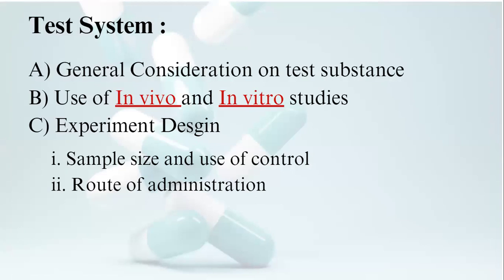General considerations for substances using in vivo and in vitro systems: considerations should be relevant to selection of animal model or other test system so that scientifically valid information can be derived. Selection factors can include pharmacokinetic profile, species, strength, gender, and age of experimental animals. In vivo and in vitro systems can include isolated organs and tissue, cell culture, cell fragments, cellular organelles, receptors, and transporters. Experiment design includes sample size, use of controls, and route of administration.